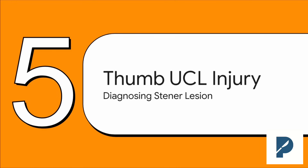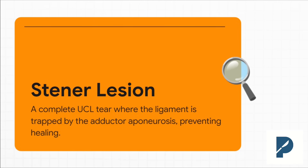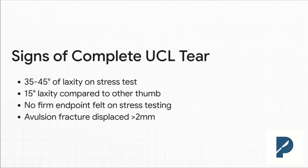Last topic: a really important soft tissue injury that can sometimes trick you because it can come with a small fracture — the thumb UCL tear, and specifically the dreaded Stener lesion. It's the whole reason why complete UCL tears need surgery. The UCL tears, and the proximal end gets displaced and flips up, sitting on top of the adductor aponeurosis. Now there's a big sheet of tissue between the two ends of the torn ligament — there is no way it can heal on its own. On physical exam, you're stressing the joint and looking for significant laxity: more than 35 degrees, or at least 15 degrees more than the uninjured thumb. But the real tell is the end point. When you stress a normal ligament, you feel a firm stop. With a complete tear — a Stener lesion — there's no firm end point. It just feels soft, mushy. That feeling is your biggest clue that you're dealing with a complete rupture that needs surgery.